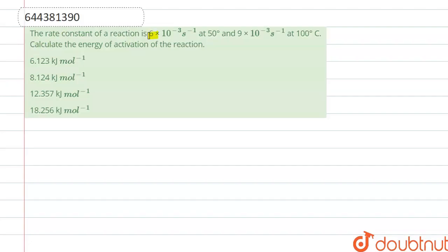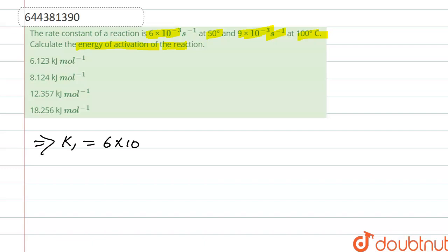The rate constant of a reaction is 6 into 10 to the power minus 3 second inverse at 50 degrees Celsius, and 9 into 10 to the power minus 3 second inverse at 100 degrees Celsius. We need to calculate the energy of activation of the reaction. So let's see — the rate constant k1 is 6 into 10 to the power minus 3 second inverse at temperature T1, which is 50 degrees Celsius.